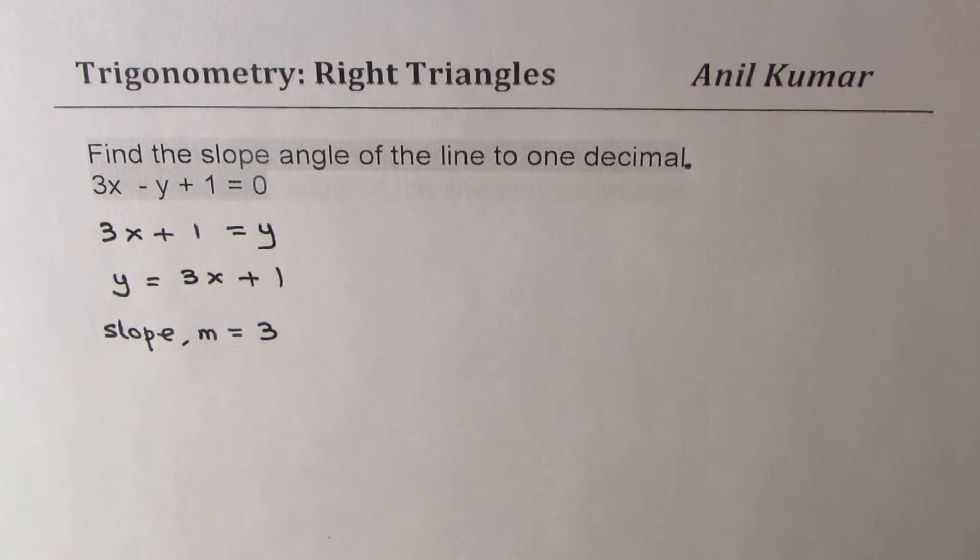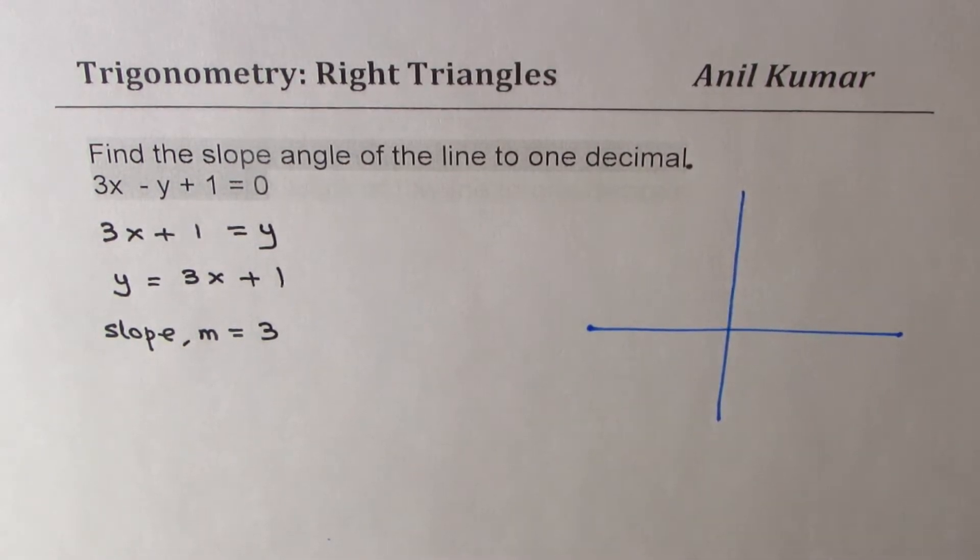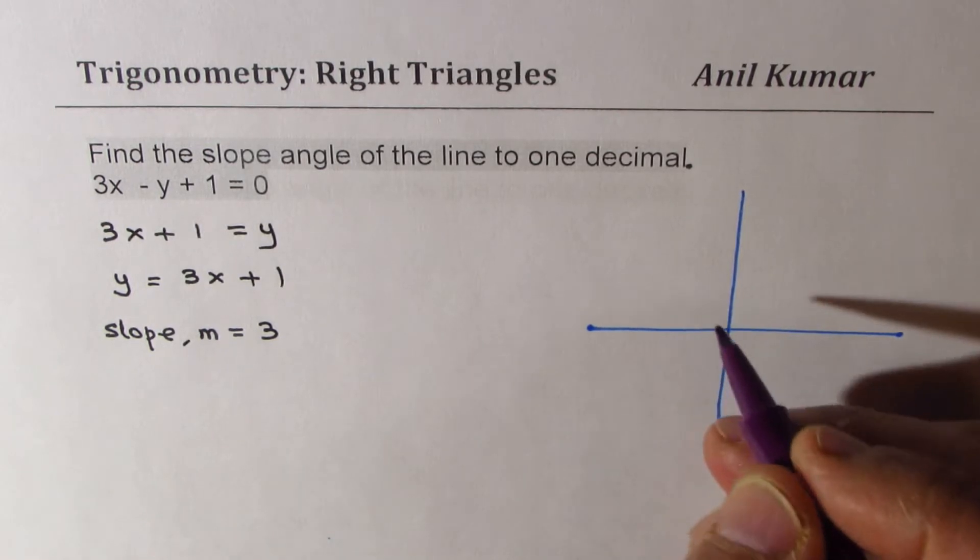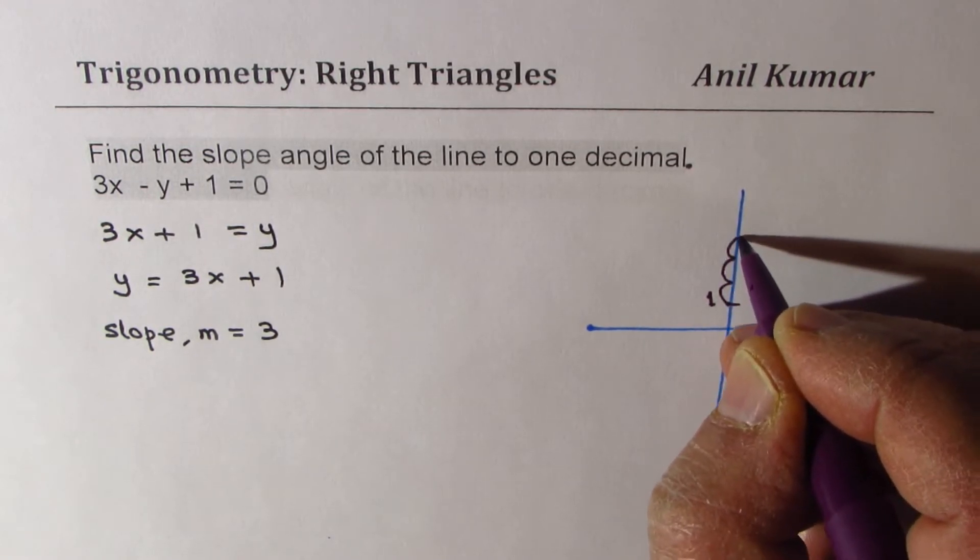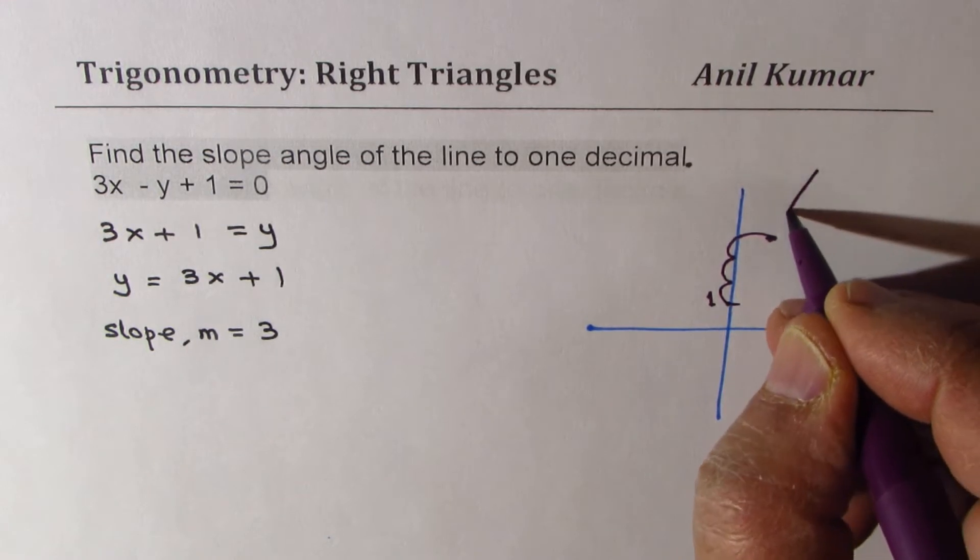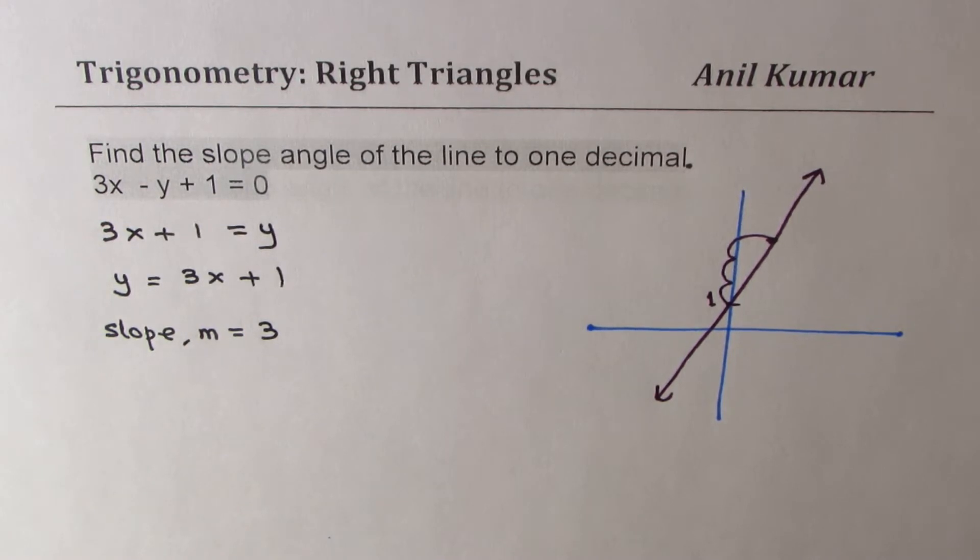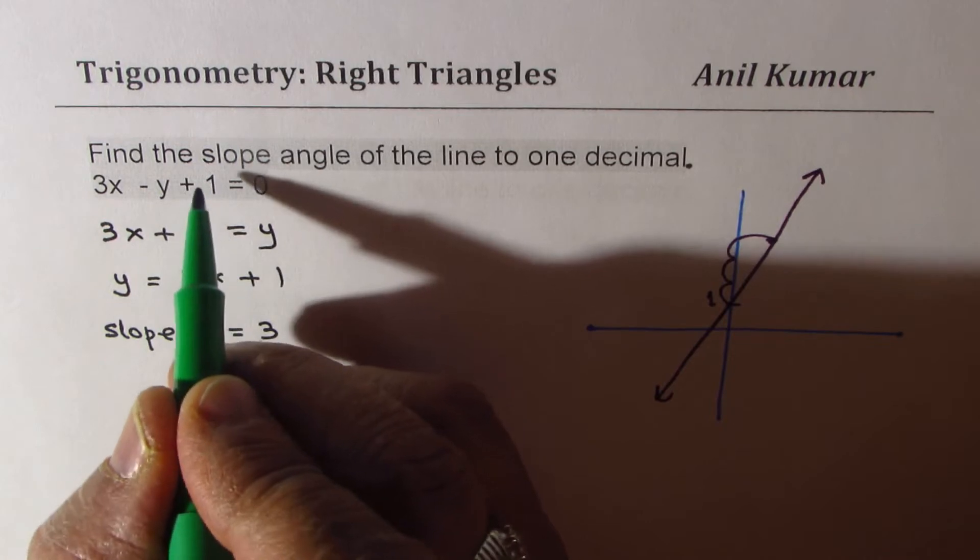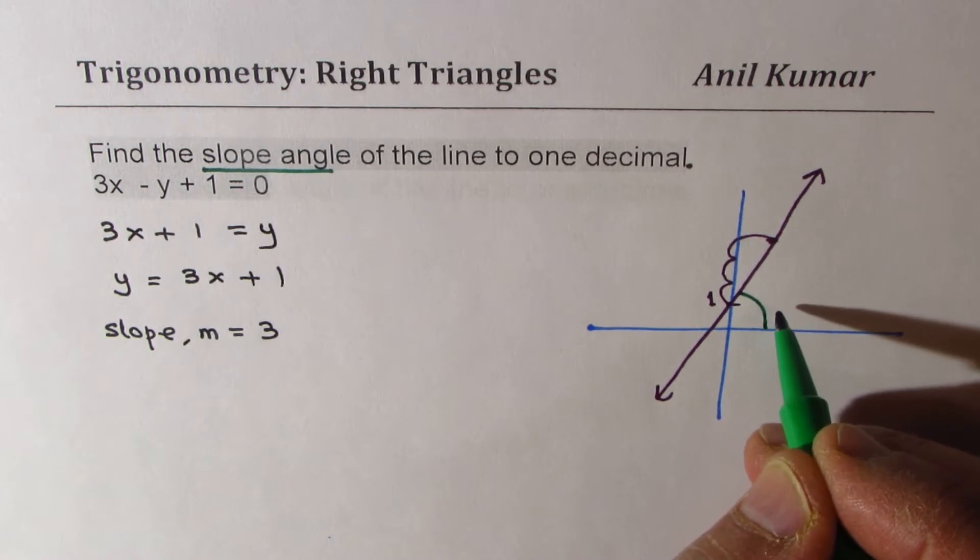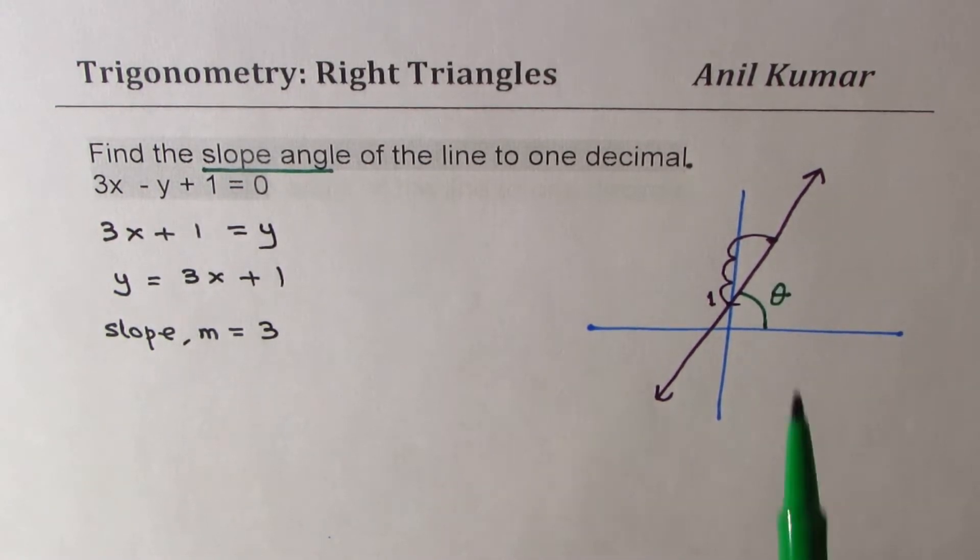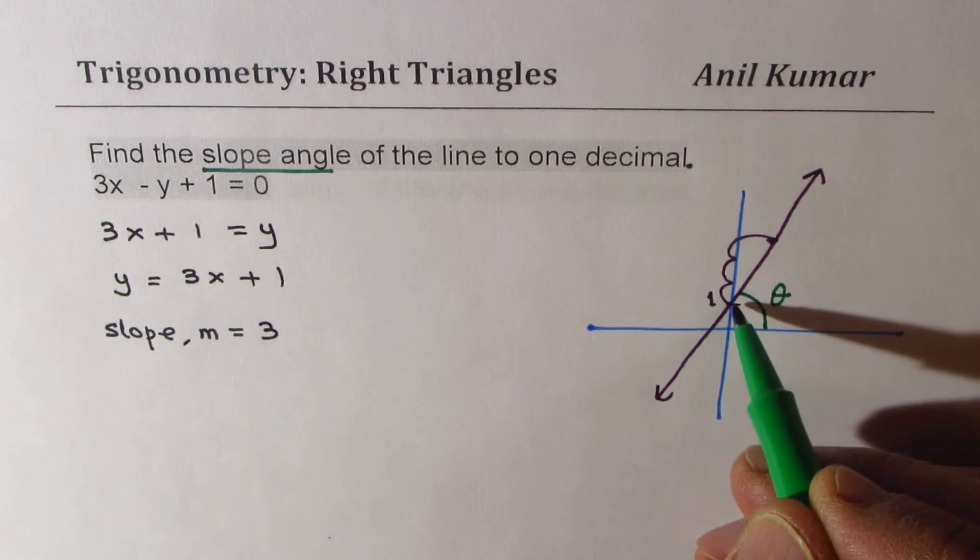Let me make a small sketch of this particular line. If you plot this line on a graph, it will have a y-intercept of 1. Slope of 3 means you go up 3 units - 1, 2, 3 - and 1 unit right. So you get to this point. When you join these points, you get your line. Now when we say slope angle, it means this angle which it makes with the horizontal. Let me write this angle as theta. Clearly this angle is related to m which is 3, which is rise over run.